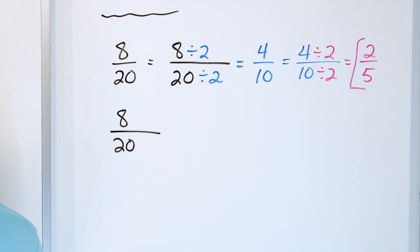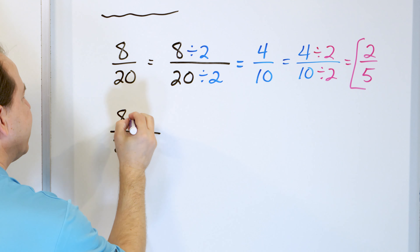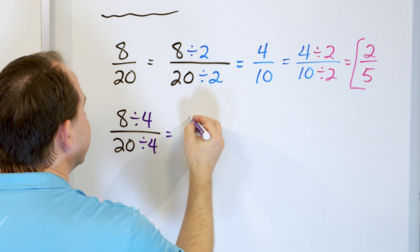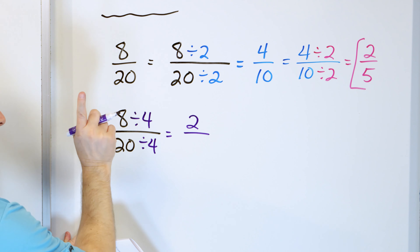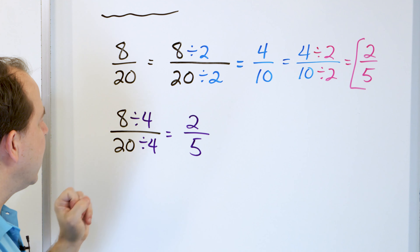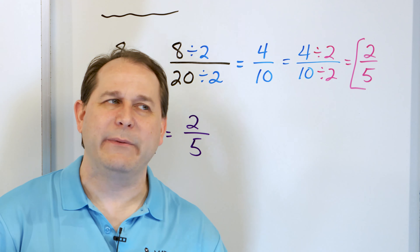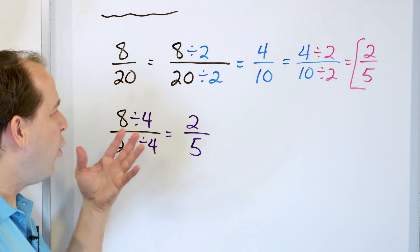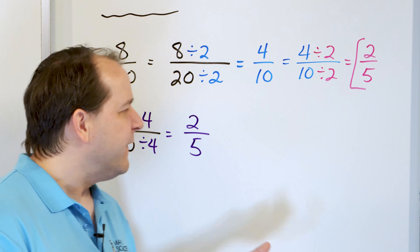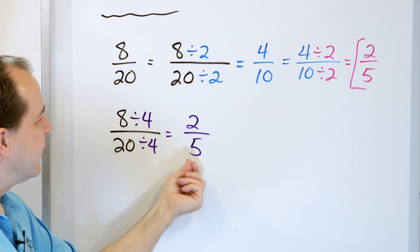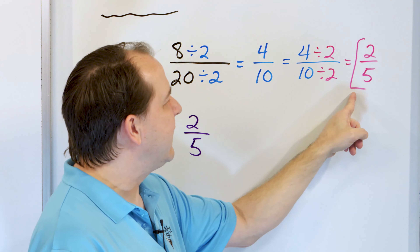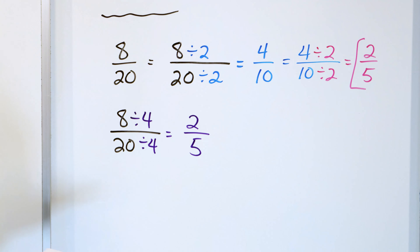Let me rework the problem — you can actually divide the top and bottom by four. Eight divided by four is two, and twenty divided by four is five. You get the same answer. If you pick the bigger number — which is called the greatest common factor — then you'll get the simplified fraction in the fewest steps. If you happen to see that you can divide by four, you get the answer in one step. But if not, just divide by two twice — you'll always get the right answer.